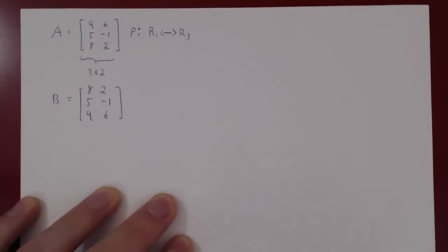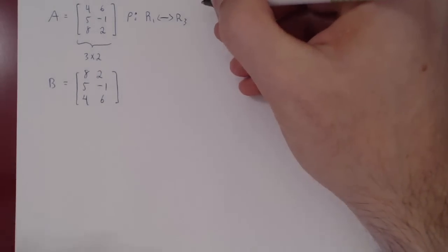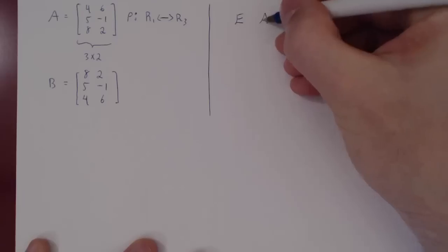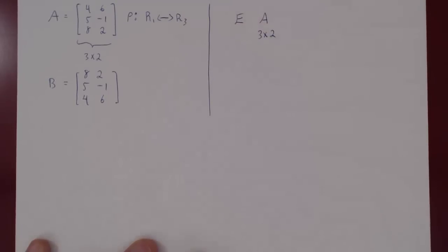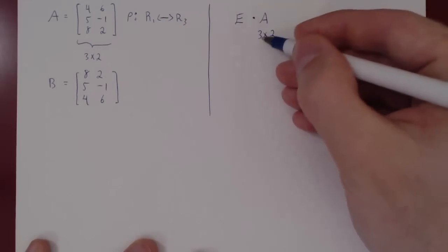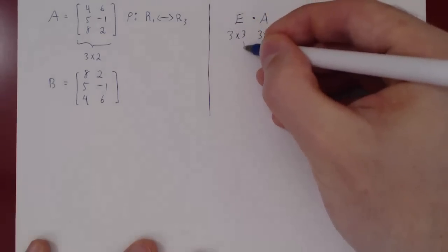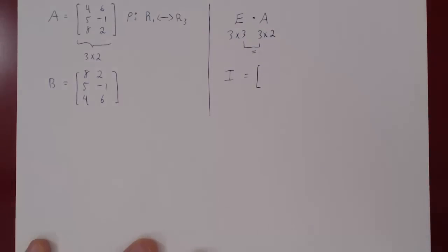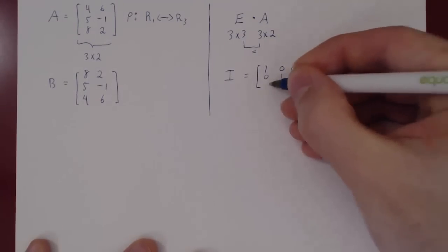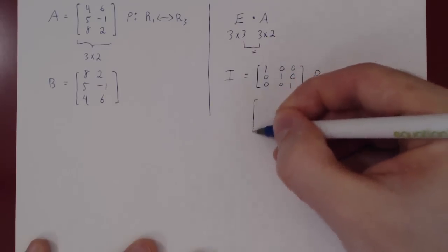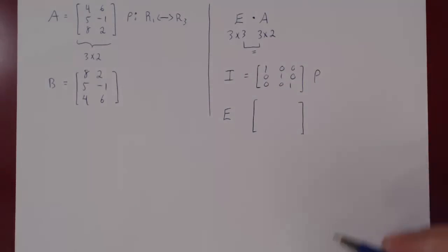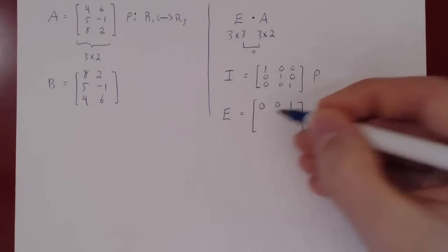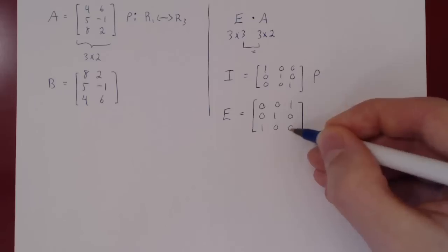Now let's construct B a different way. Since A is 3×2, E must be 3×3 for the multiplication EA to be defined. So I is the 3×3 identity matrix. We apply the row operation — swapping row 1 with row 3 — to I. The first row becomes [0, 0, 1], the second row stays [0, 1, 0], and the third row becomes [1, 0, 0]. So E = [0,0,1; 0,1,0; 1,0,0].